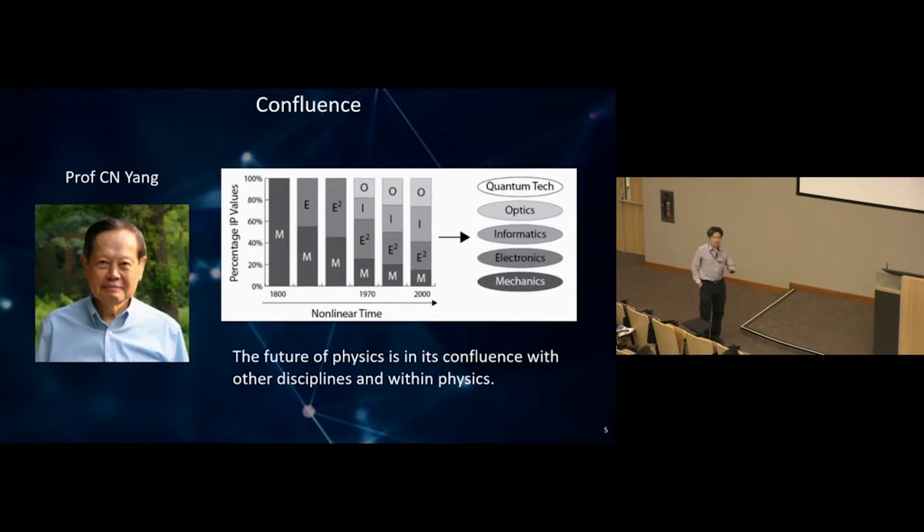More than 30 years ago when I was a high school student here in Singapore, I had the privilege to meet Professor Yang Chen Ning here in NUS. After the conference, he was asked what is the future of physics, and he gave one word: confluence. How physics should interact with biology, with information science.